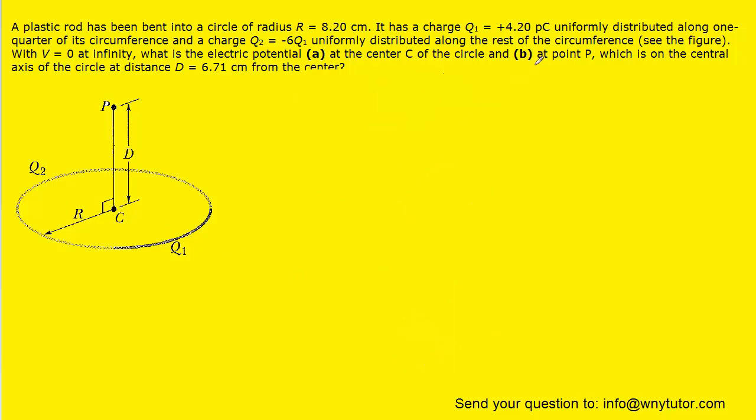Now part b of the question is very similar. We're calculating the total electric potential up here at point p. We just once again want to recognize that the distance from any point along these charge distributions is going to be the same. So the distance from here to that point is the same as the distances to that point, which is the same as that, and so on. And because of that constant distance, when we go to calculate the potential of this continuous charge distribution,